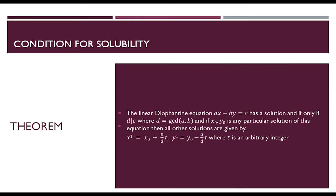Once we have one solution, how do we obtain the other solutions? If we have one particular solution x naught, y naught, then we can find all other solutions using the equations: x dash equal to x naught plus (b/d) times t, and y dash equal to y naught minus (a/d) times t, where t is any integer. We will now see the proof of this theorem.